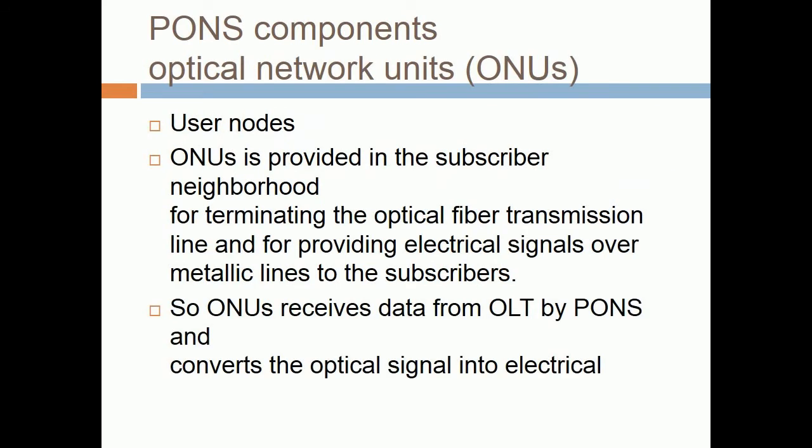PON's components — Optical Network Units, ONUs, are user nodes provided in the subscriber neighborhood. They terminate the optical fiber transmission line and provide electrical signals over metallic lines to subscribers. ONUs receive data from the OLT via PON and convert the optical signal into electrical signals.